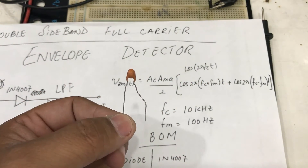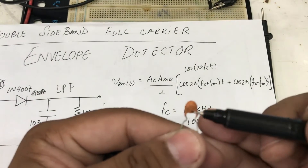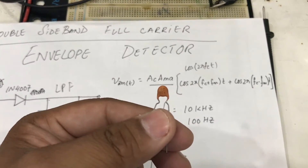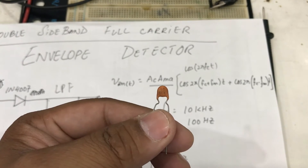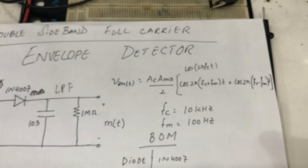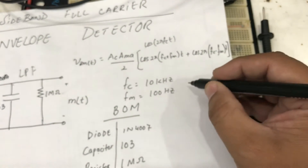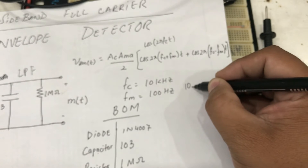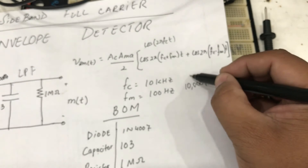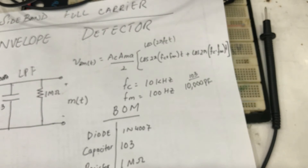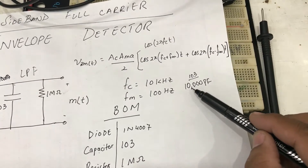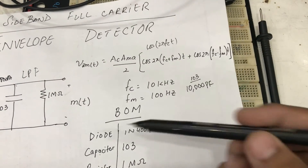This is what a ceramic capacitor looks like — it has no polarity. Notice the number on top of the capacitor. The capacitor I'm using has the number 103. What does 103 mean? It corresponds to: take the digits '1' and '0', then add three zeros after them and the unit is picofarads. So 103 actually corresponds to 10,000 picofarads.